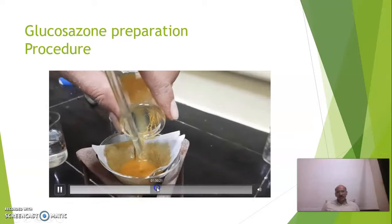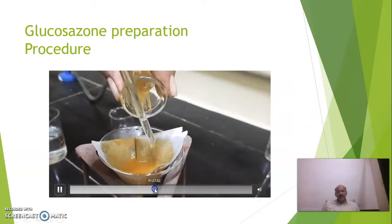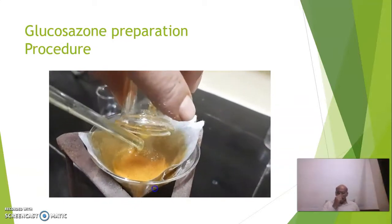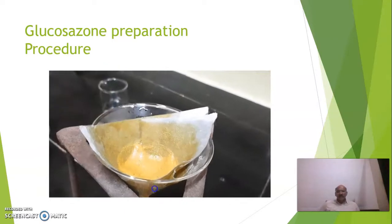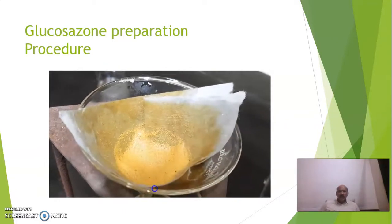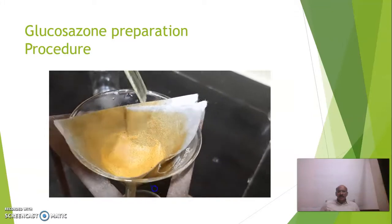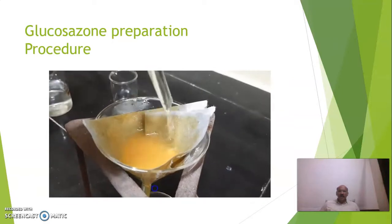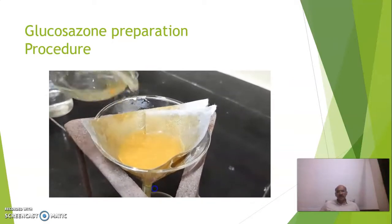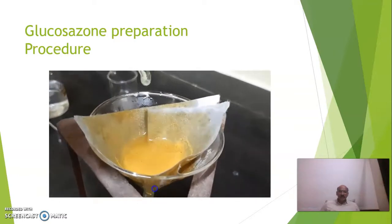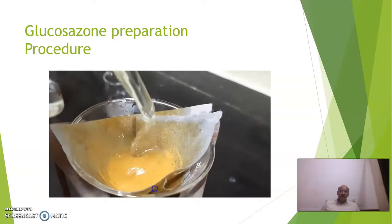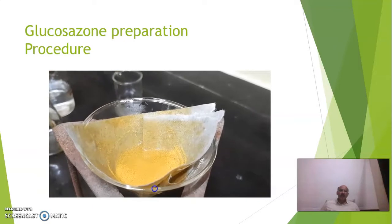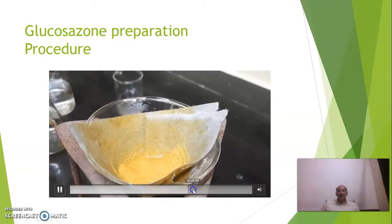Now reagent used is phenylhydrazine, three molecules of phenylhydrazine. Reaction type will be condensation at carbon number 1 to form C double bond N-NH-Ph functional group. Then second molecule of phenylhydrazine will bring oxidation at carbon number 2 for the formation of second carbonyl group, and that will again undergo condensation with third molecule of phenylhydrazine for the formation of glucosazone.